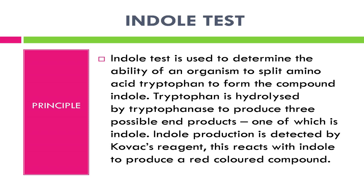When indole is combined with Kovac's reagent — which contains hydrochloric acid and p-dimethylaminobenzaldehyde in amyl alcohol — the solution turns from yellow to cherry red. Because amyl alcohol is not water soluble, the red coloration will form in an oily layer at the top of the broth.